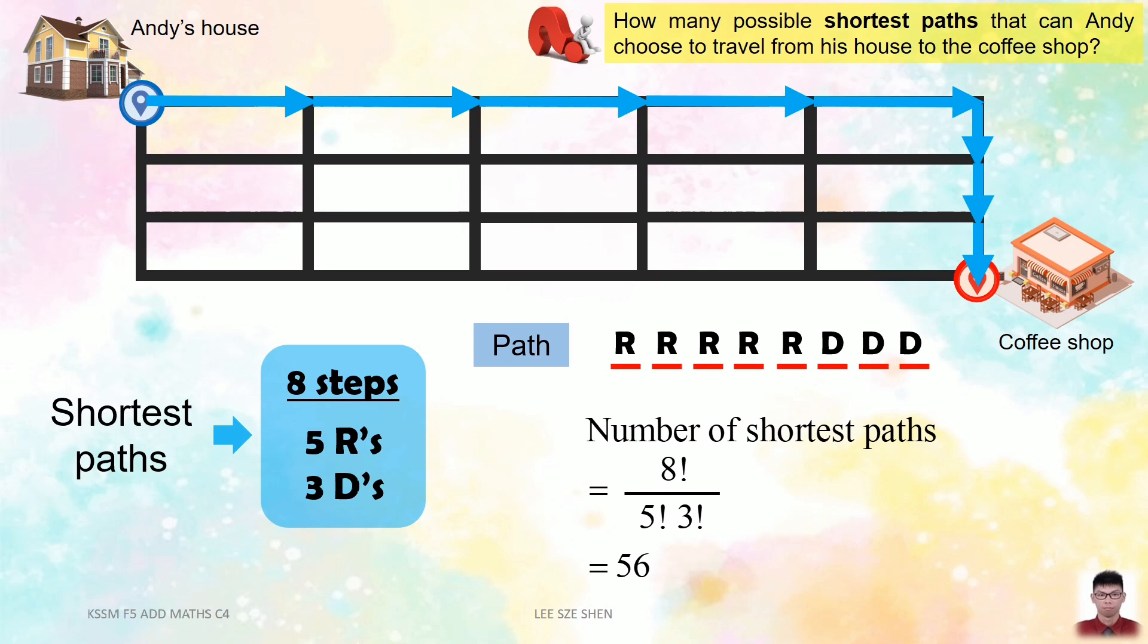Do you realize that 8 factorial over 5 factorial 3 factorial is actually the same as 8 choose 5 and also 8 choose 3? Recall the formula of n choose r, which is n factorial over n minus r factorial r factorial. So they are actually the same. It means that we can also use combinations to find the number of the shortest path too. 8 choose 5 means among the 8 positions, we choose any 5 of them for R, then the rest will be D. Or we can have 8 choose 3, which means among 8 positions, we choose any 3 positions for D, and the rest will be R.